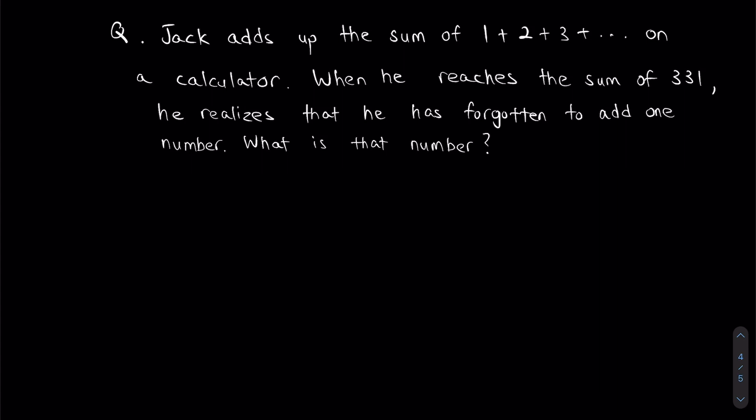So basically, what Jack is doing is he's just adding consecutive numbers on his calculator. After plus 3, we'll have plus 4 plus 5 up until a certain number. We don't really know what that number is. However, during this entire process, he forgot to add one number. So therefore, the number that he got on his calculator, which is 331, is technically smaller—take note of that—is smaller than the actual number he should have gotten.